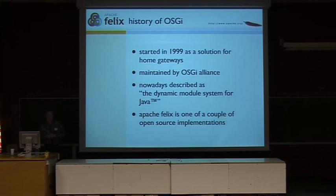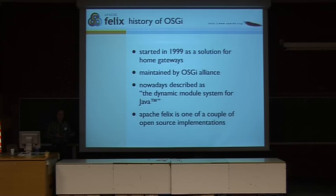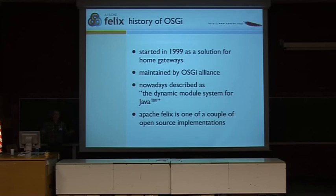Even though the home gateway wasn't a big success, people found other things to do with it — both in the embedded space, but also on the desktop and even on servers. You have Eclipse using it as the plug-in system, and nowadays you even have things like the Spring framework and GlassFish using it as the basis for application servers. Nowadays, if you look at the OSGI website, it's explained as the dynamic module system for Java. Apache Felix is one of several open source implementations, which is a good thing for any standard to have a little competition.